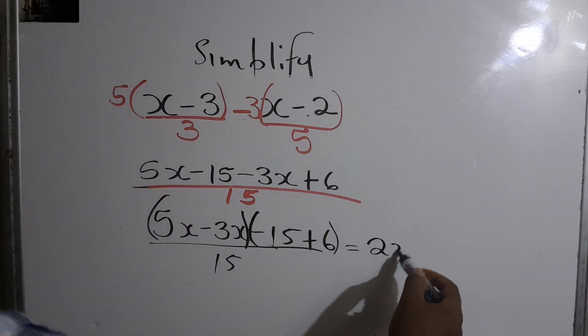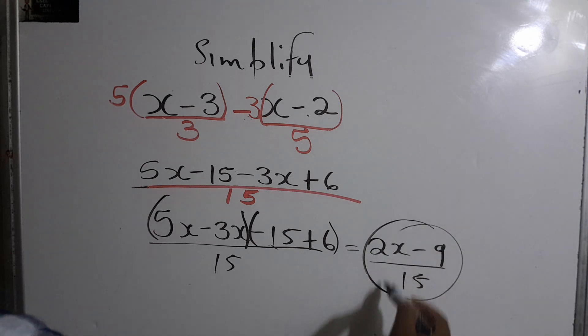Negative 15 plus 6 will give us a negative 9 all over 15, and that will be our answer.